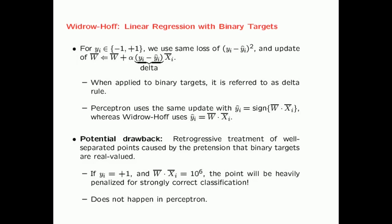One consequence is a retrogressive treatment of well-separated points. Imagine a point that is easy to classify — it is on the correct side of the linear separator and far from it. In that case, the dot product between the learned weight vector and the feature vector could be very large for a positive-class training point. In Widrow-Hoff learning, this point is heavily penalized because using the raw dot product as prediction and squaring the difference from yi produces a very large loss. This problem does not occur in the perceptron, where the predicted value is the sign of the dot product.